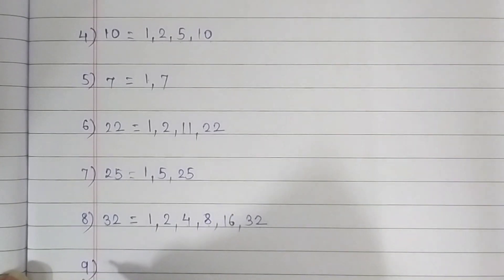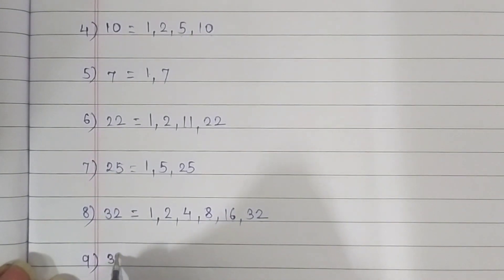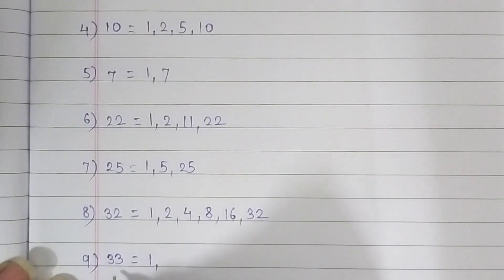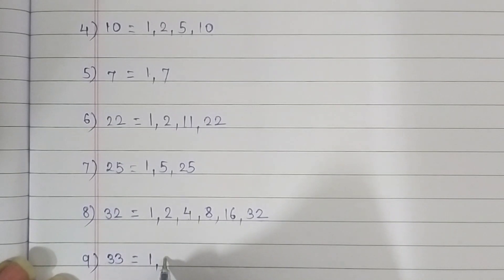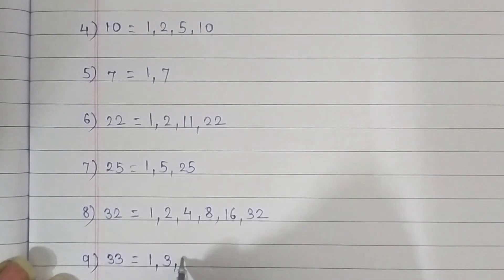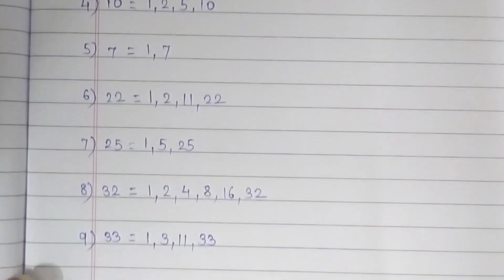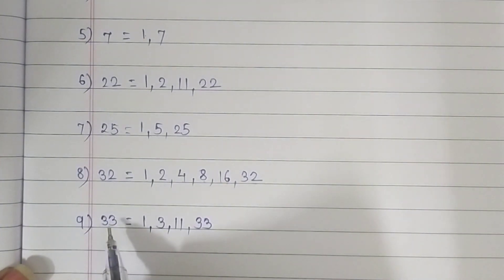The 9th question is 33. The first factor is 1. Then it comes in the 3 times table: 3 elevens are 33, so we write 3. Then it comes in the 11 times table. And finally, it comes in the 33 times table. So the factors of 33 are 1, 3, 11, and 33.